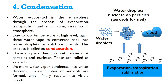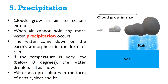These water droplets mix with dust particles and nucleate — these are called aerosols. As more water vapor condenses into water droplets, more aerosols are formed, which finally results in visible clouds. Clouds grow in the air to a certain extent, and when air cannot hold any more water, precipitation occurs.